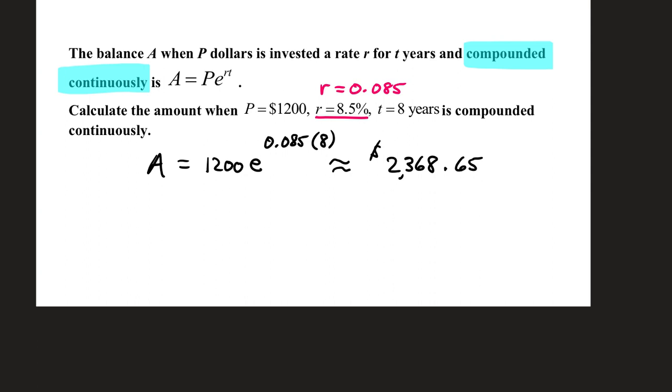The balance A when P dollars is invested at a rate R for T years and compounded continuously is A equals P times E raised to the RT power. For this one, the only thing that I changed was the description, compounded continuously instead of N number of times per year. $1,200 is still your initial investment, 0.085 is still the interest rate in decimal form, and T is eight years.